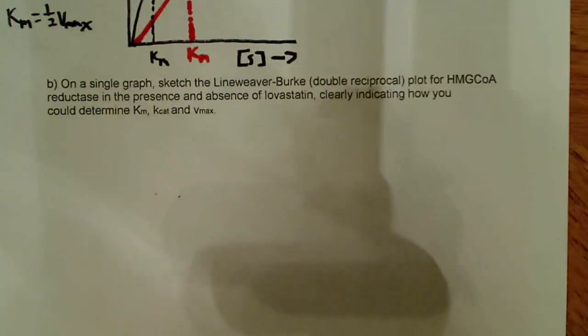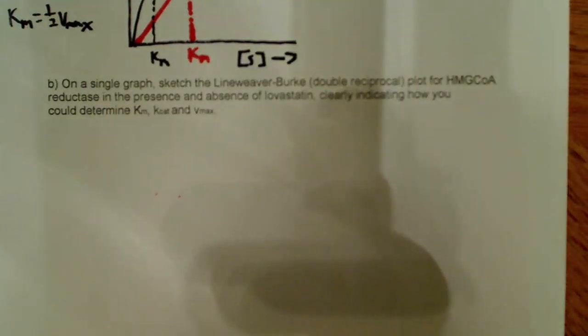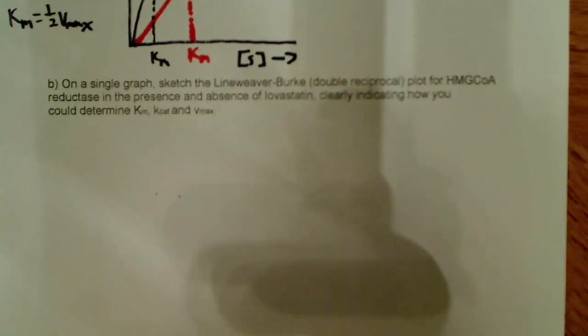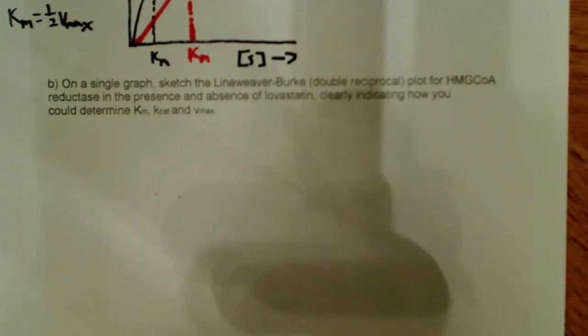Now, let's go to the next part. It says, on a single graph, sketch the Lineweaver-Burk double reciprocal plot for HMG-CoA reductase in the presence and absence of lovastatin, clearly indicating how you could determine Km, Kcat, Vmax. So, they want to know, they essentially want us to do the same thing.